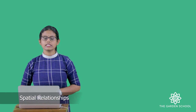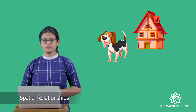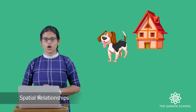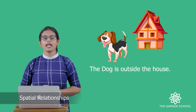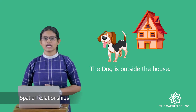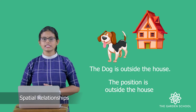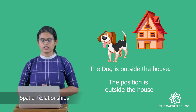Let's see another example. Can you see a dog? It is outside the house. So we can say the dog is outside the house — the position is outside the house.